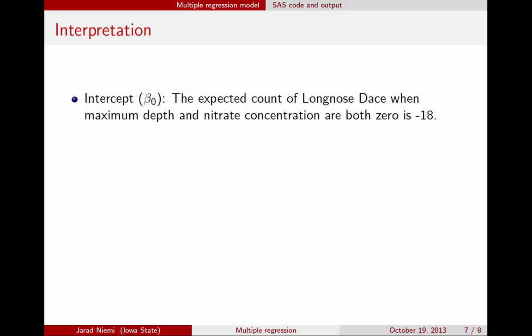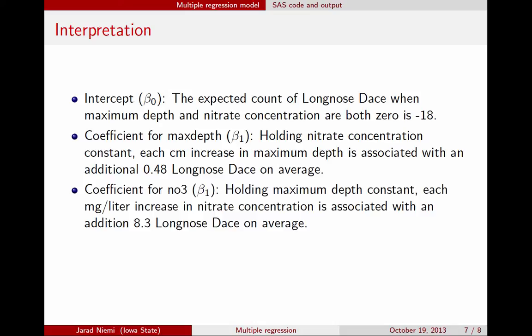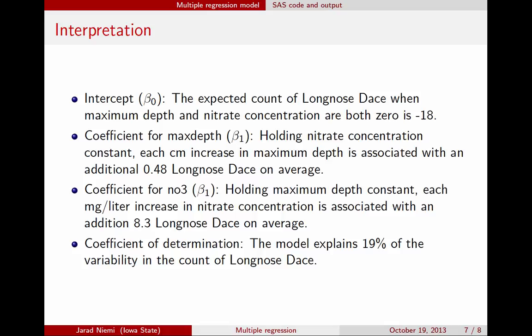To reiterate those interpretations: the intercept is the expected count of long-nosed dace when maximum depth and nitrate concentration are both zero — that turned out to be minus 18, which is not useful here. Beta1, the coefficient for max depth, means holding nitrate concentration constant, each centimeter increase in max depth is associated with an additional 0.5 long-nosed dace counted on average. Beta2, the coefficient for nitrate concentration, means holding maximum depth constant, each milligram per liter increase in nitrate is associated with an additional 8.3 long-nosed dace on average. The coefficient of determination shows the model explains about 19% of the variability in the count.